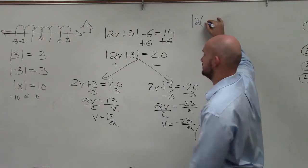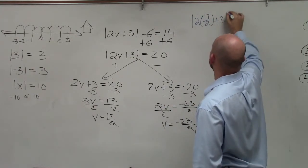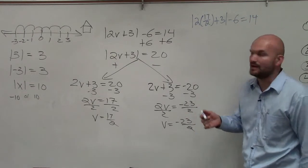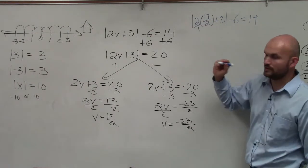Absolute value of 2 times, I'll do the first one, 17 over 2 plus 3 minus 6 equals 14. Now I'm just going to do this kind of in my head. 2 times 17 over 2, that's like 2 over 1.